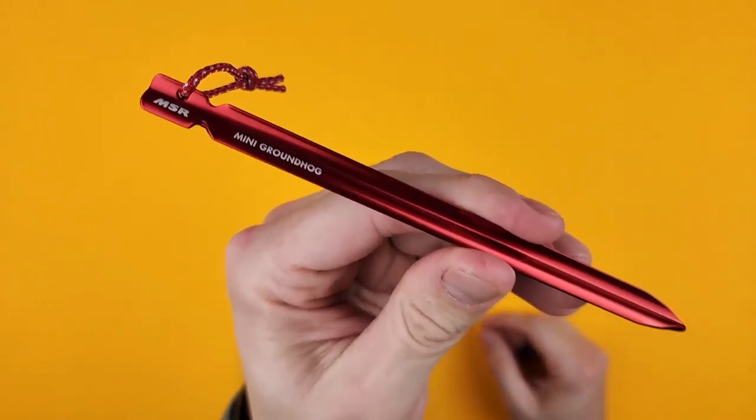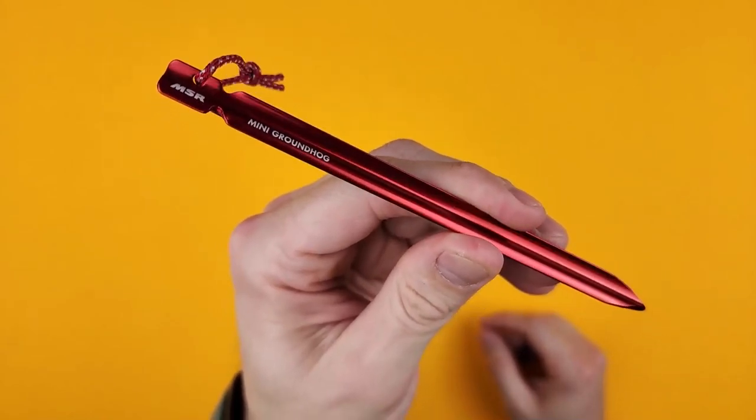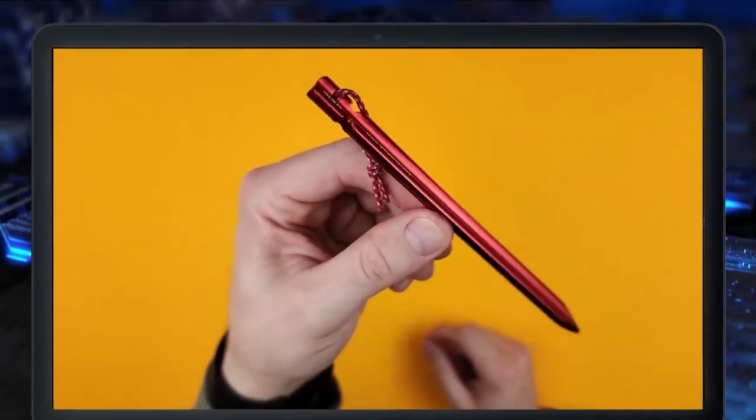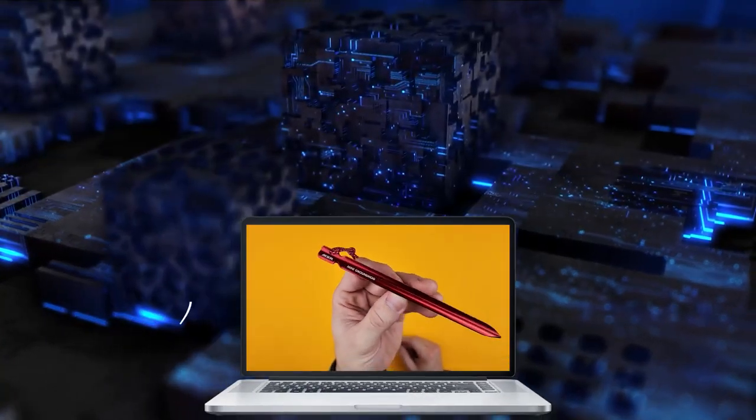These are really hard to bend. Ordinary tent pegs—super easy and light aluminum—you can just bend them, but these ones, no, they are way stronger.